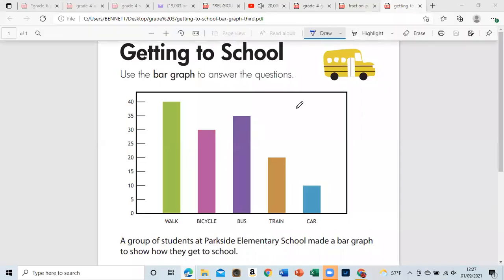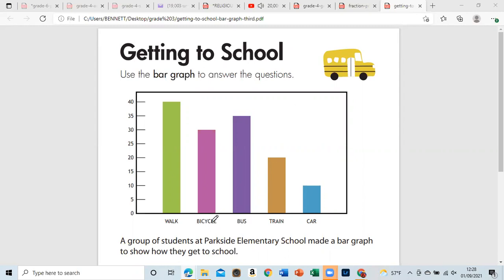So we have another one, and this one is getting to school. Basically traveling. I would say walk, bicycle, bus, train, or car. A group of students at Parkside Elementary School made a bar graph to show how they get to school.